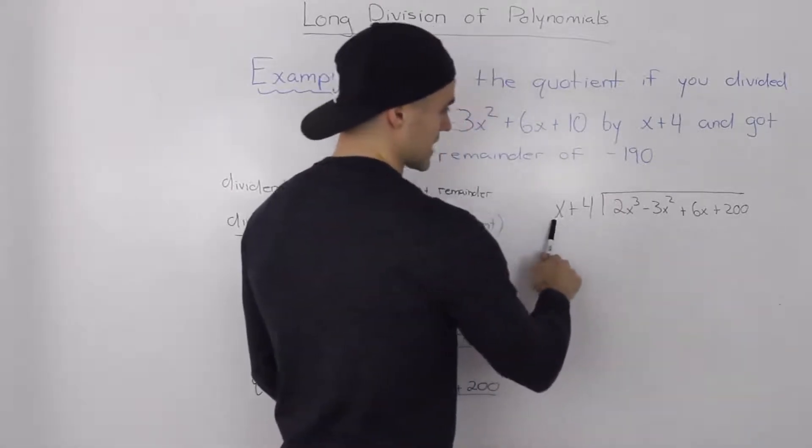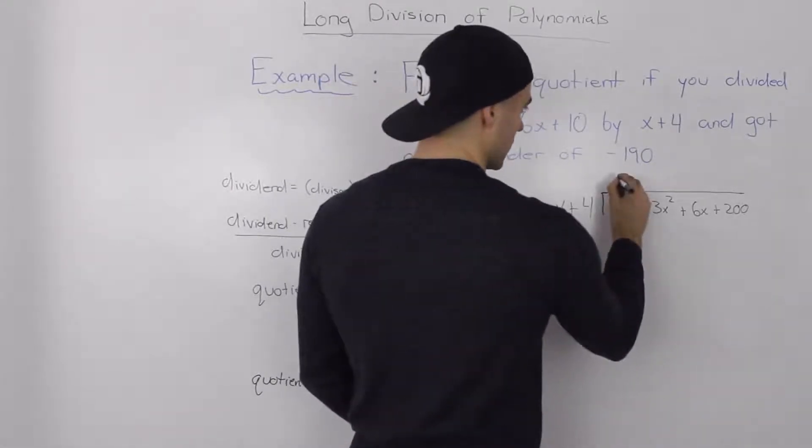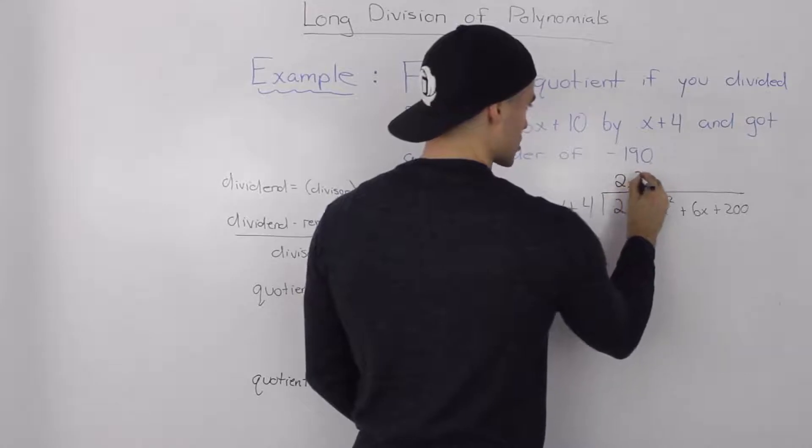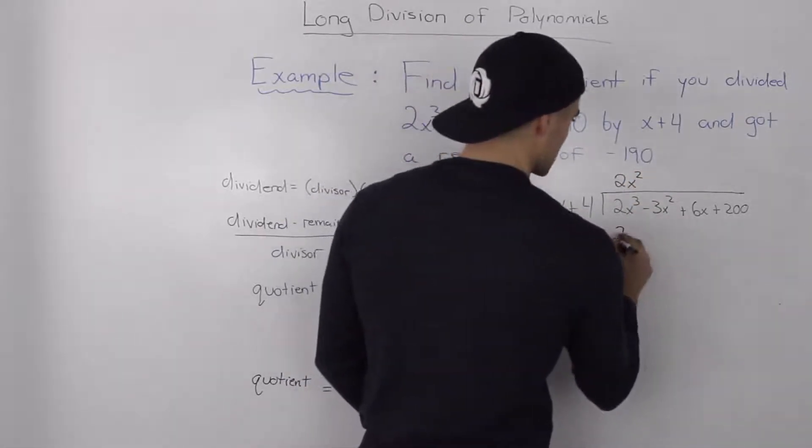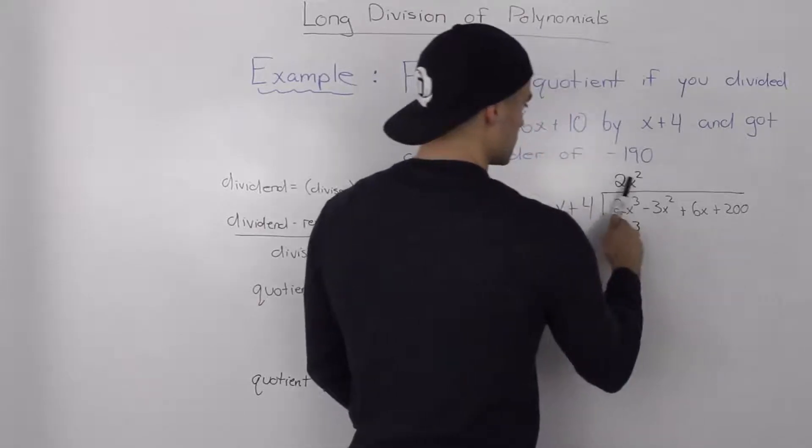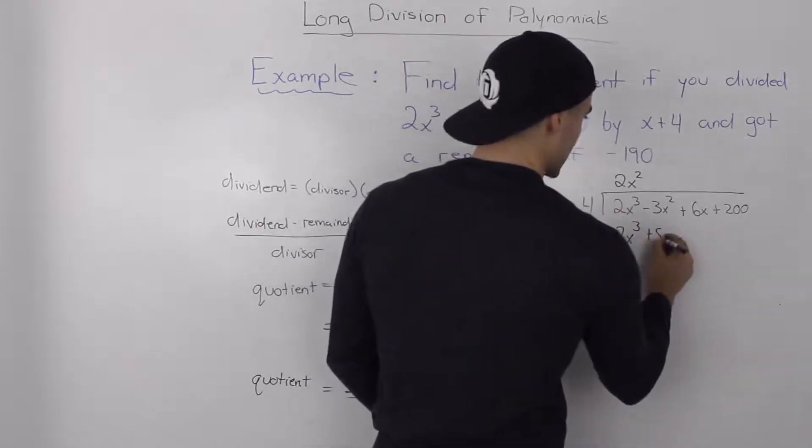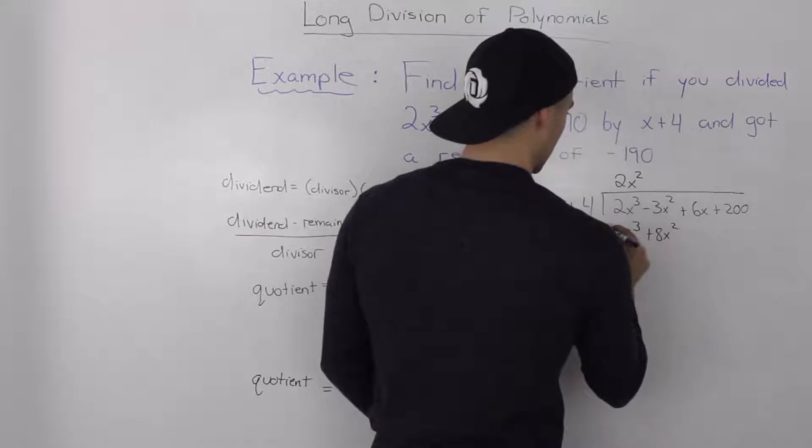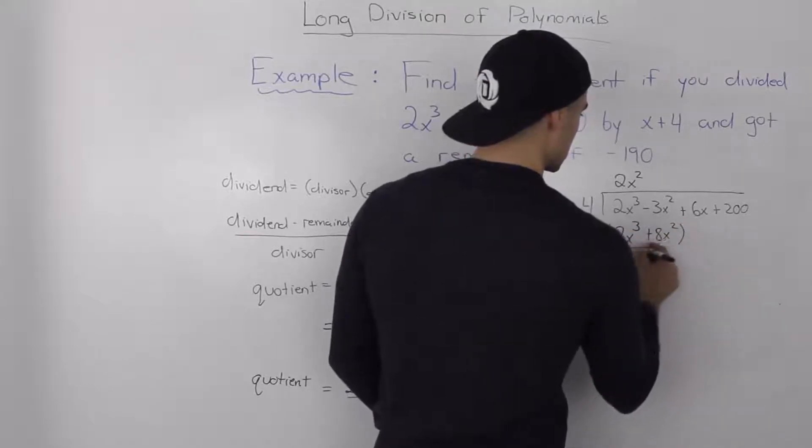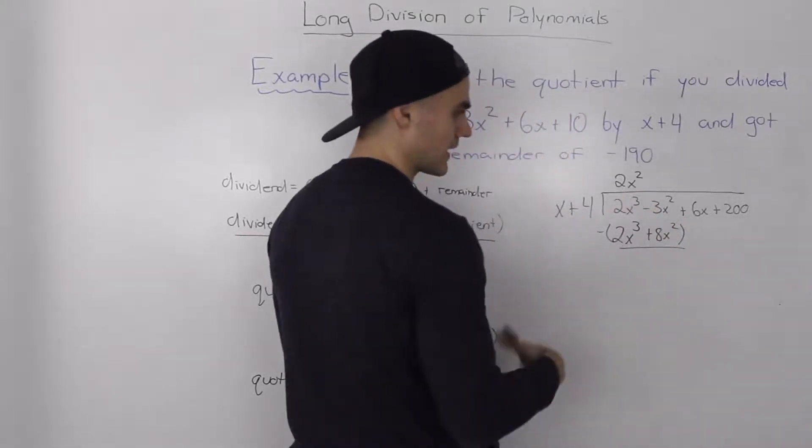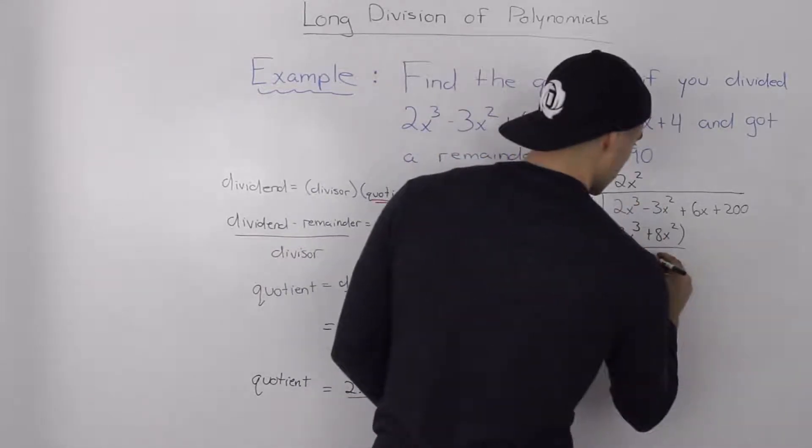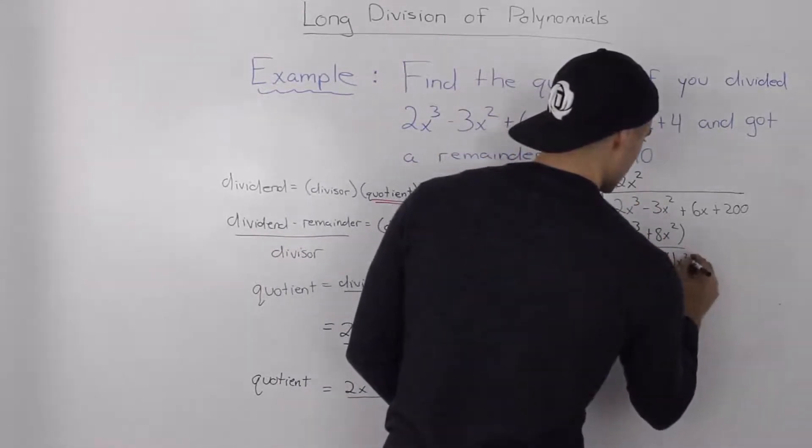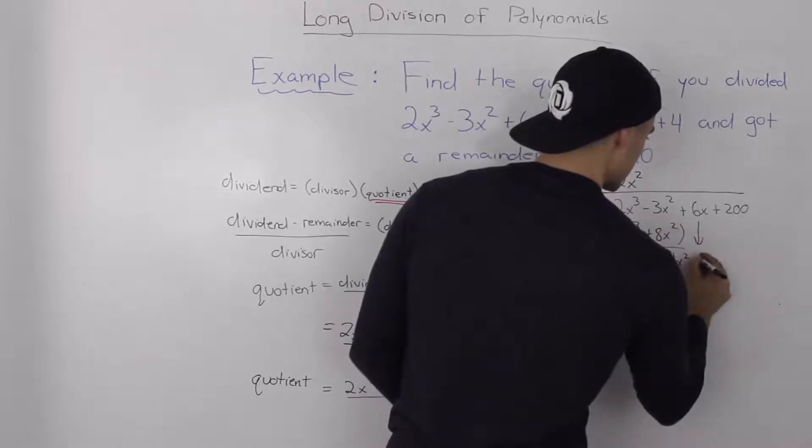So taking this division here and rewriting it in this form so we could just perform long division on this now. How many times does x go into 2x³? Well it goes in 2x² times. And then 2x² times x gives us 2x³, 2x² times 4 gives us 8x². And then when we minus these, 2x³ - 2x³ nets out to 0, -3x² - 8x² gives us -11x². We bring down this 6x.